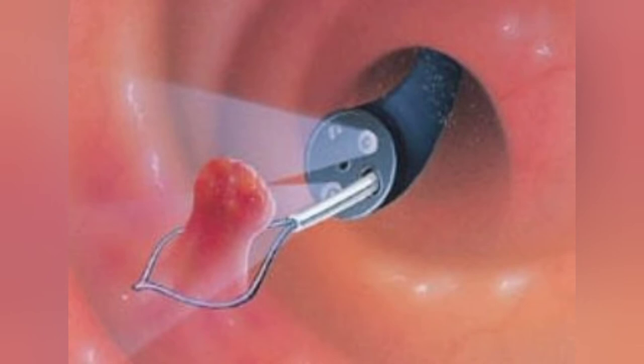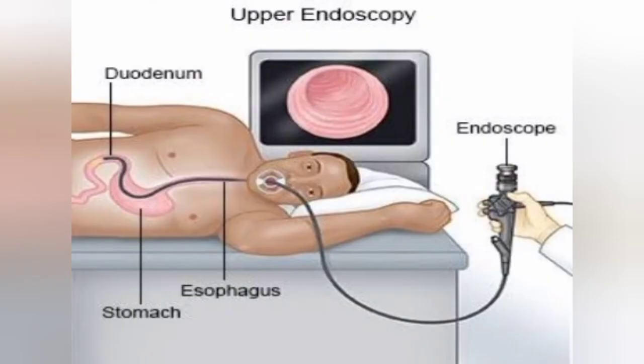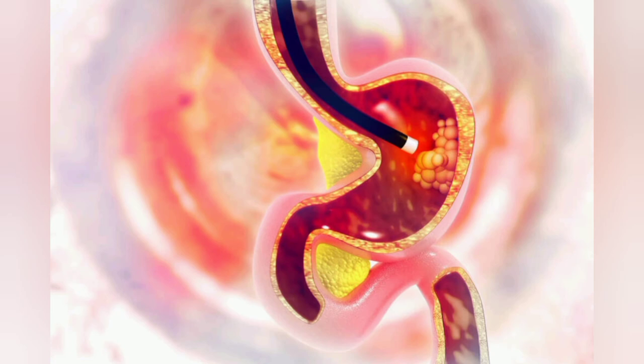First is stomach endoscopy, also called upper endoscopy, in which the upper digestive system — including the esophagus, stomach, and duodenum — is examined using a flexible gastroscope. Upper endoscopy helps doctors diagnose problems related to digestion, nausea, vomiting, abdominal pain, difficulty in swallowing, and sometimes abdominal bleeding.